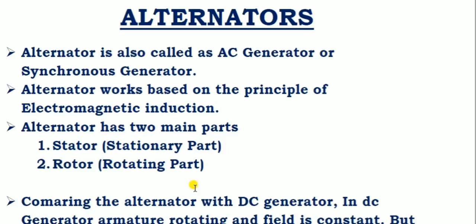What is an alternator? An alternator is an AC generator. A generator converts mechanical energy into electrical energy. The output of a DC generator is DC electrical energy. So which converts mechanical energy into AC electrical energy is called an AC generator. Therefore, alternator is an AC generator.